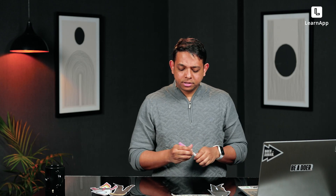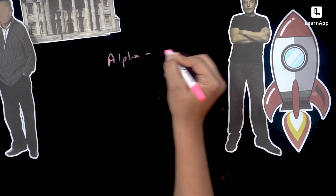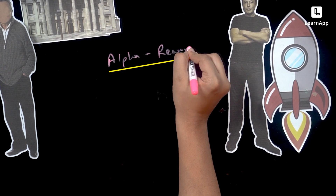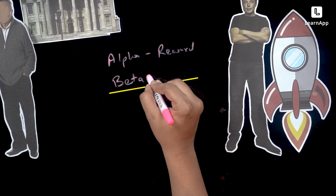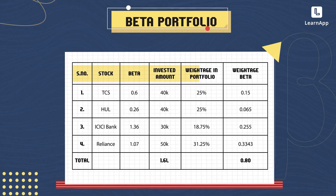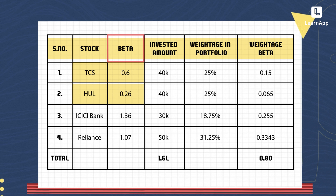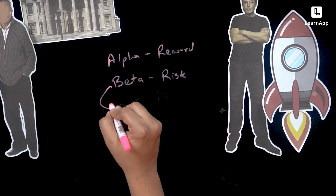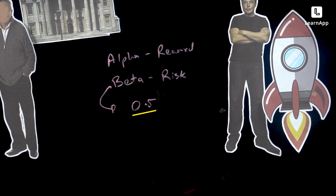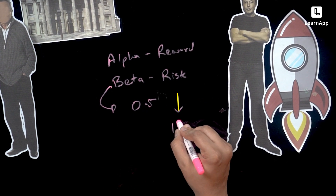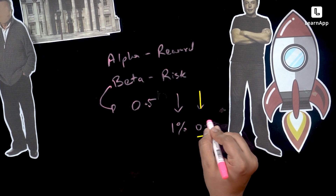Alpha basically looks at reward, and beta looks at risk. You can see TCS and HUL — TCS has a beta of 0.6 and HUL has a beta of 0.26. With a beta of 0.5, this basically means if Nifty falls 1%, your stock will fall 0.5%. That's what beta is — it measures the volatility of your stock versus Nifty.